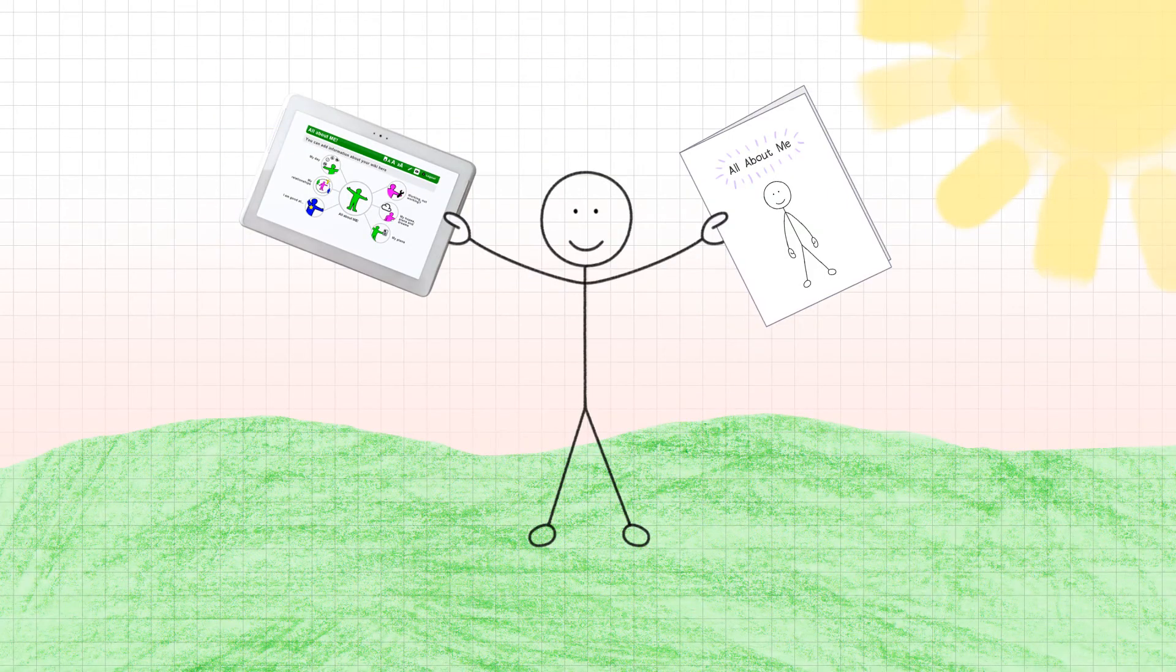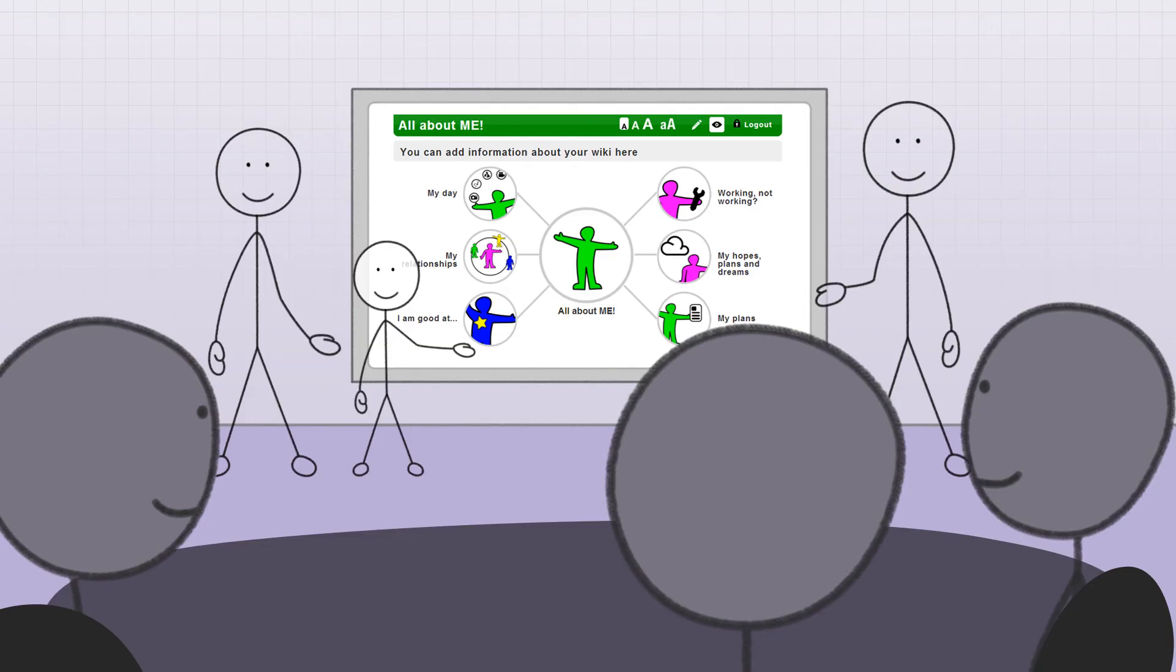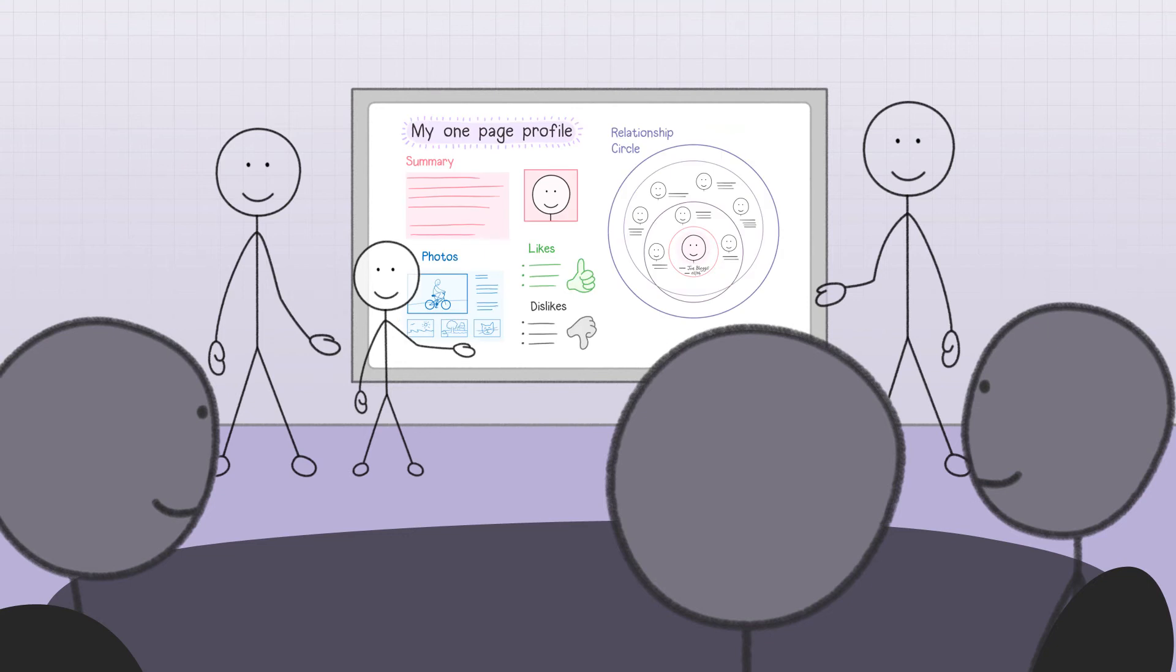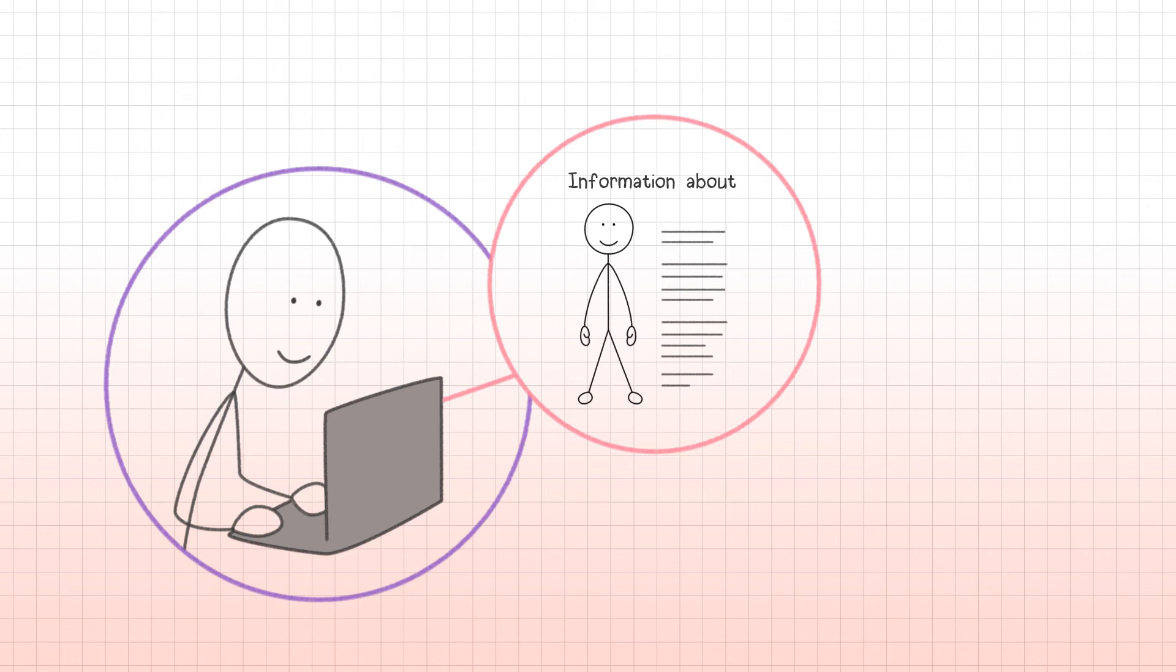The wiki website and the All About Me document helps to tell the young person's story so the people who are developing the EHC plan fully understand the family situation. At the same time, professionals will be asked to provide information about the young person's needs. All of this information will help to complete my story.